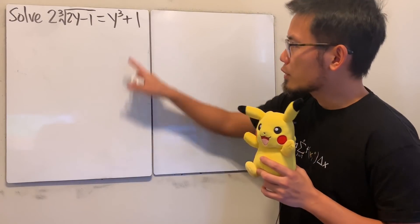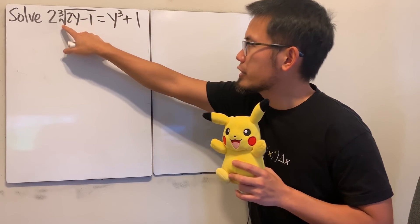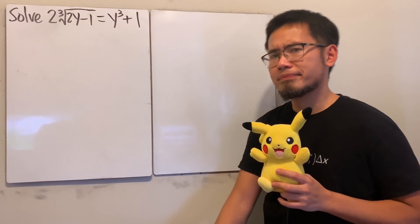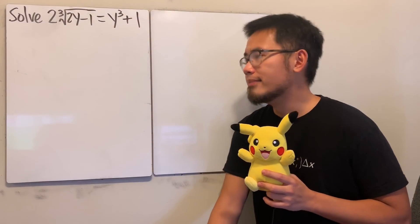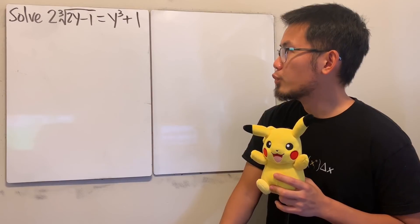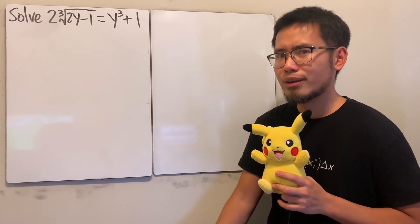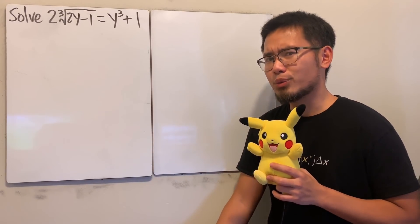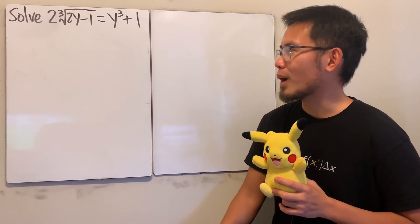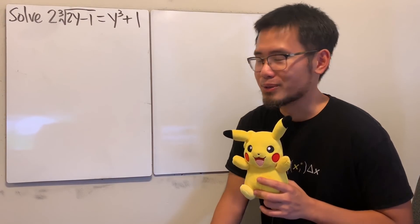Here we are going to solve for y. We have a cube root on the left, but here we have y cubed on the right. How can we approach this? Do we just raise both sides to the third power? I don't really want to do that, because that way we'll end up with y to the ninth power. So don't do that.